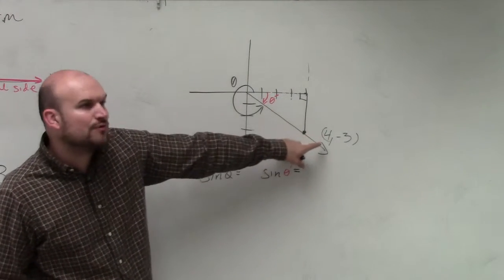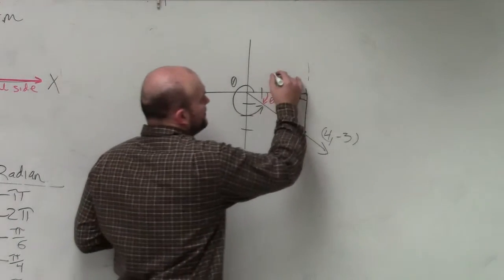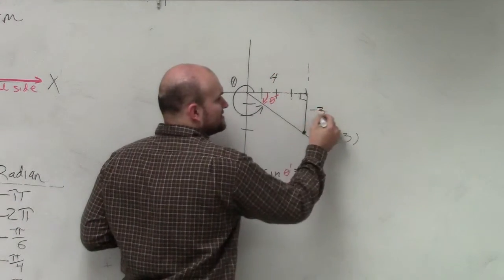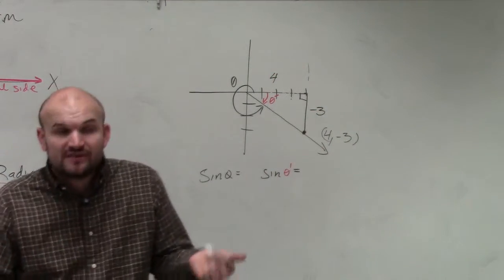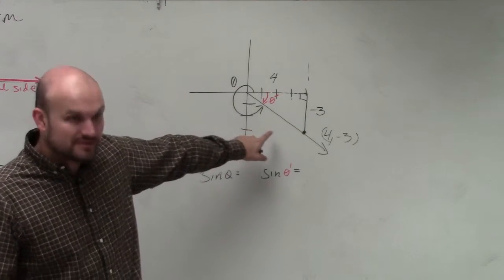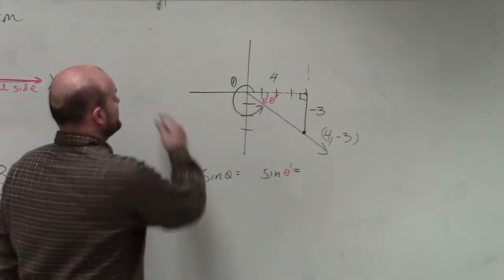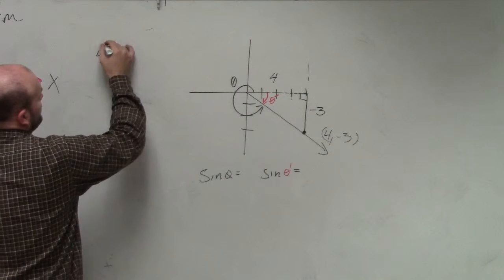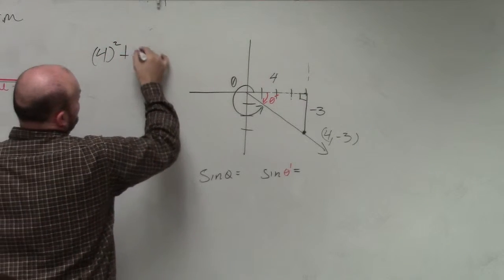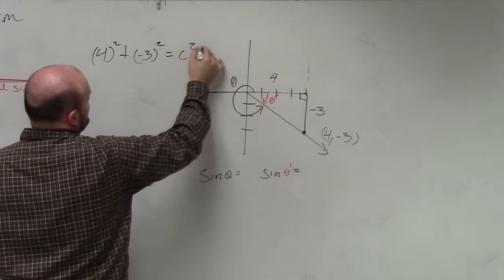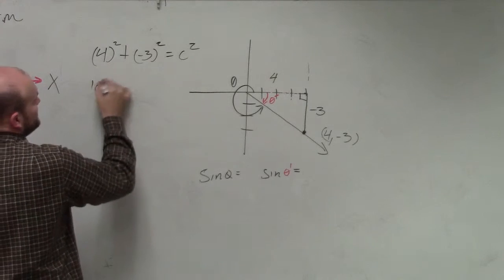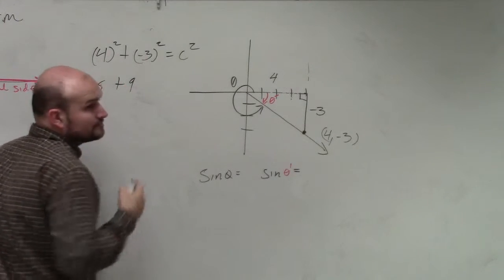Now do we know the lengths of those triangles? Well, if the triangle, that point, is 4, negative 3, then I know that length is 4. That length is negative 3. Do we now have enough information to figure out what the hypotenuse is? Yes, we do. Yeah, absolutely. We could do 4 squared plus negative 3 squared equals c squared or x squared or whatever. So we have 16 plus 9.